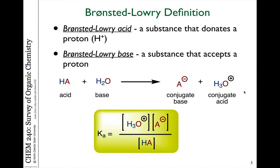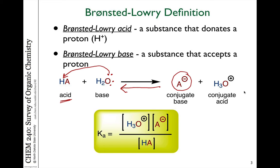We have another definition put forward by Bronsted and Lowry: a substance that donates a proton is a Bronsted-Lowry acid, and a substance which accepts a proton is a Bronsted-Lowry base. We think about these acid-base reactions as equilibria. Acid HA is a generic acid — A could be OH in terms of water, or chloride in HCl. HA is deprotonated by the base water; the lone pair of water takes the proton from HA, generating the conjugate base A⁻ and the hydronium ion, which is the conjugate acid.